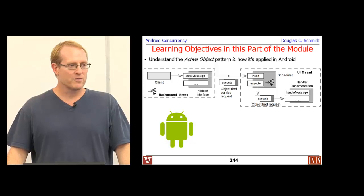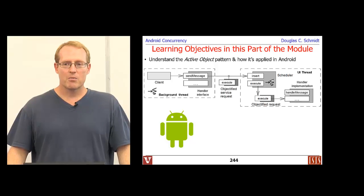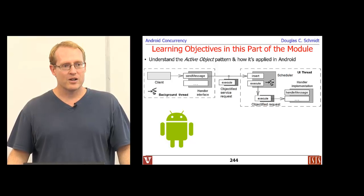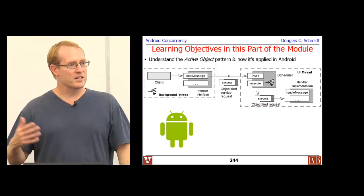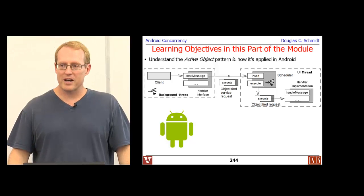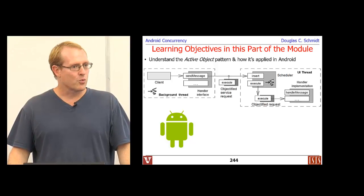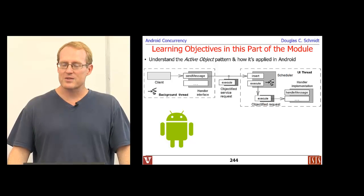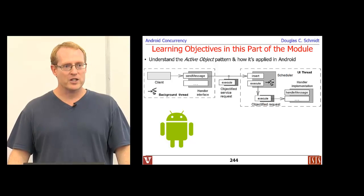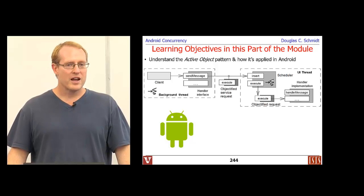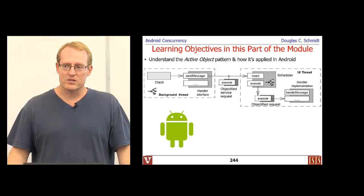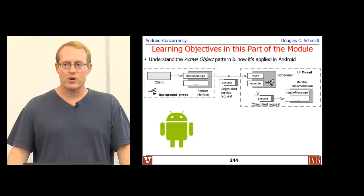Then we're going to talk about how the active object pattern can be applied in Android, and I'll give you a bunch of different examples — some things we've already seen, but we're going to look at them in the context of patterns. Throughout the course, I'll be talking about how Android works, the classes, the interactions between the classes, frameworks, and I'll always try to relate the design choices that Android makes back to patterns.